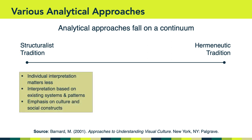On the one hand, we have the structuralist tradition. Analytical approaches from this tradition emphasize the importance of existing systems and patterns. From this perspective, individual interpretation of a picture doesn't really matter. Instead, what does matter is one's ability to look at a picture and situate it within cultural and social constructs. In other words, our individual unique perspectives and interpretations don't really matter that much. What is important is how an artifact represents or fits into a given set of cultural or social norms. That is the structuralist tradition of analyzing and thinking about visual content.